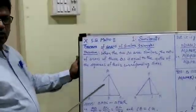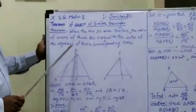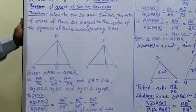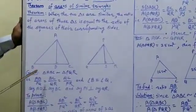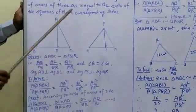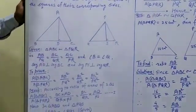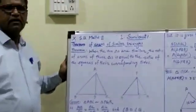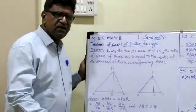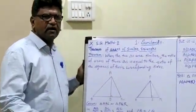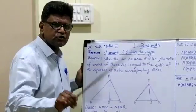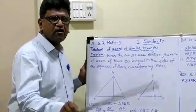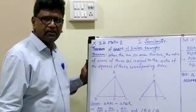In the figure, we can notice two triangles ABC and PQR. Given: triangle ABC is similar to triangle PQR. We know that when triangles are similar, their corresponding sides are equal in ratio or their corresponding angles are congruent.